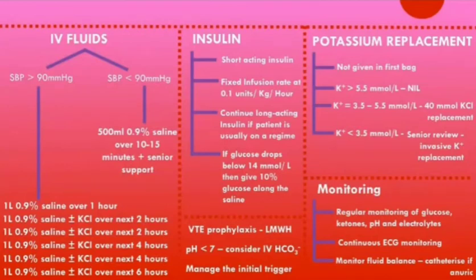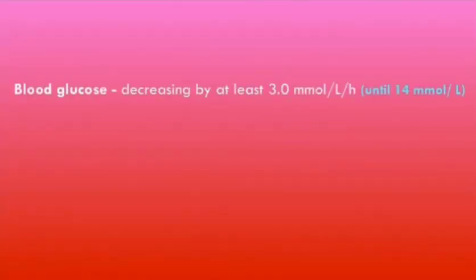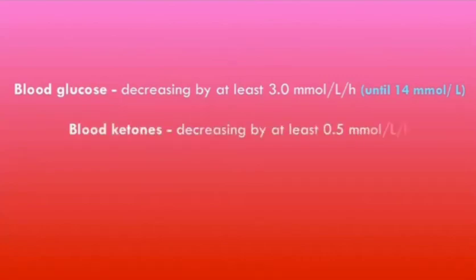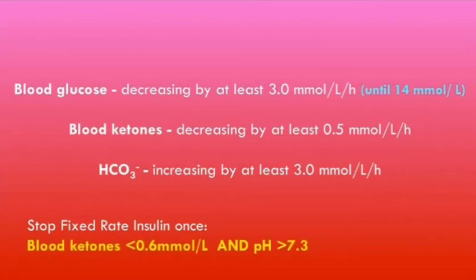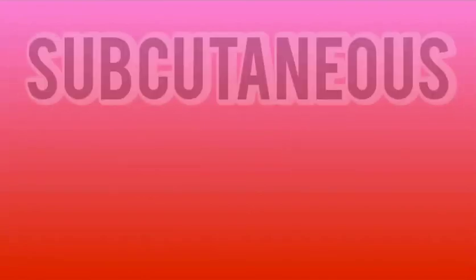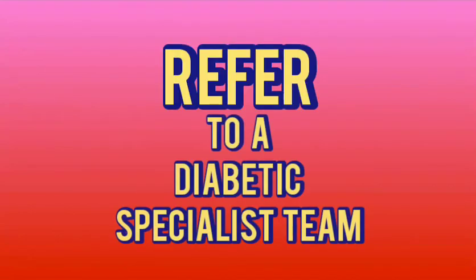The metabolic targets for DKA include: decreasing blood glucose by at least 3 mmol/L per hour until it reaches 14 mmol/L, at which point 10% glucose is considered; decreasing blood ketones by at least 0.5 mmol/L per hour; and increasing bicarbonate by at least 3 mmol/L per hour. The fixed rate insulin infusion can be stopped once blood ketones are less than 0.6 mmol/L and pH is greater than 7.3, indicating the ketoacidosis has resolved. Once the patient can eat and drink, convert them back to their subcutaneous insulin regime and refer to the diabetic specialist team.